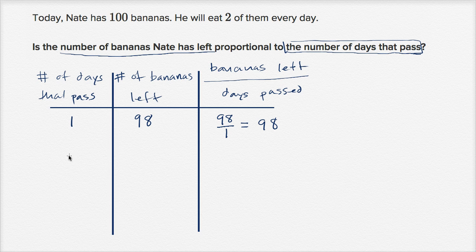Alright, when two days have passed, how many bananas is he gonna have left? Well he's going to consume two more bananas, so he's gonna have 96 left. And so what's the ratio? It's going to be 96 to two, which is equal to 40, which is equal to 48. So clearly this ratio is not constant.